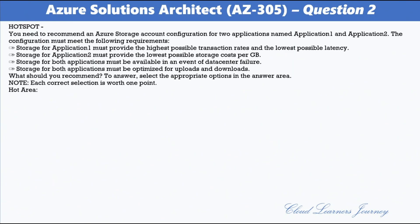Question 2. You need to recommend an Azure Storage Account configuration for two applications named Application 1 and Application 2. The configuration must meet the following requirements: storage for Application 1 must provide the highest possible transaction rates and the lowest possible latency; storage for Application 2 must provide the lowest possible storage costs per GB; storage for both applications must be available in the event of a data center failure; and storage for both applications must be optimized for uploads and downloads.